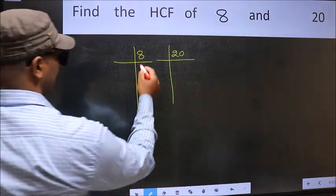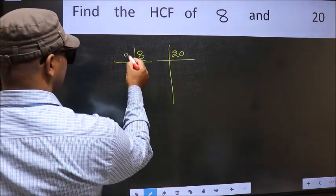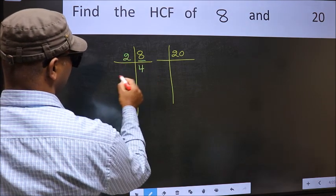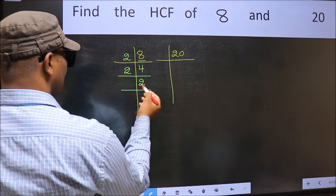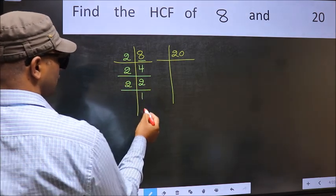Next, here we have 8. 8 is 2 times 4. Now 4 is 2 times 2. 2 is a prime number, so 2 times 1 is 2.